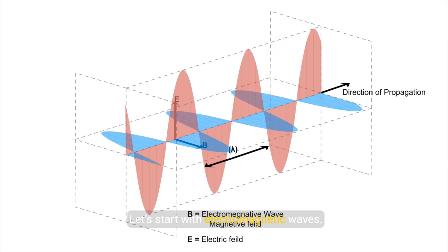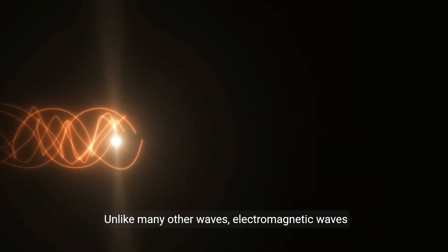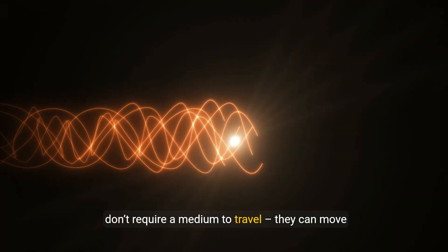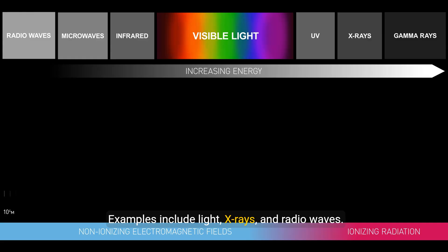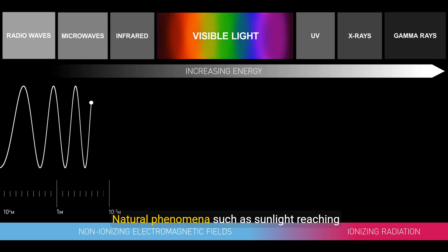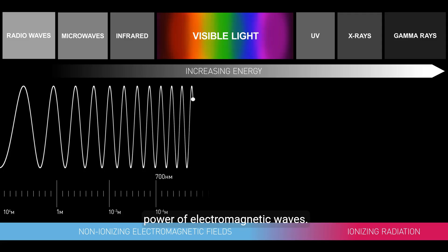Let's start with electromagnetic waves. These waves consist of oscillating electric and magnetic fields that propagate through space. Unlike many other waves, electromagnetic waves don't require a medium to travel. They can move freely through the vacuum of space. Examples include light, x-rays, and radio waves. Natural phenomena such as sunlight reaching Earth or the northern lights demonstrate the power of electromagnetic waves.